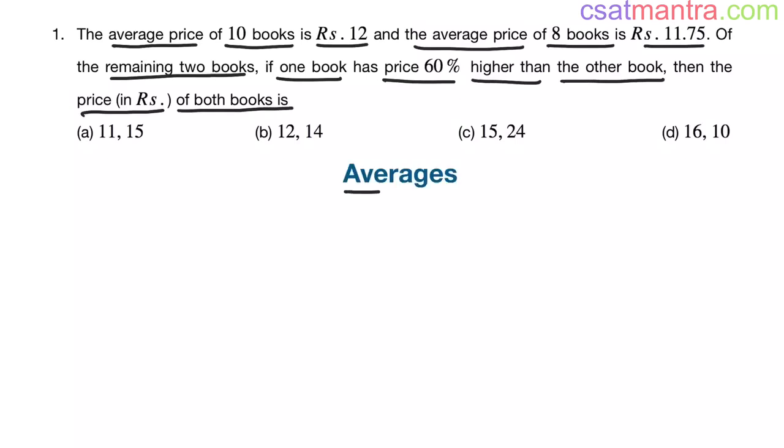This question is from averages chapter. I told percentages chapter is very important. If you observe, the question is a mix of averages and percentages concepts. The average price of 8 books is Rs. 11.75. I am assuming those books prices as B1, B2 up to B8. 8 books.